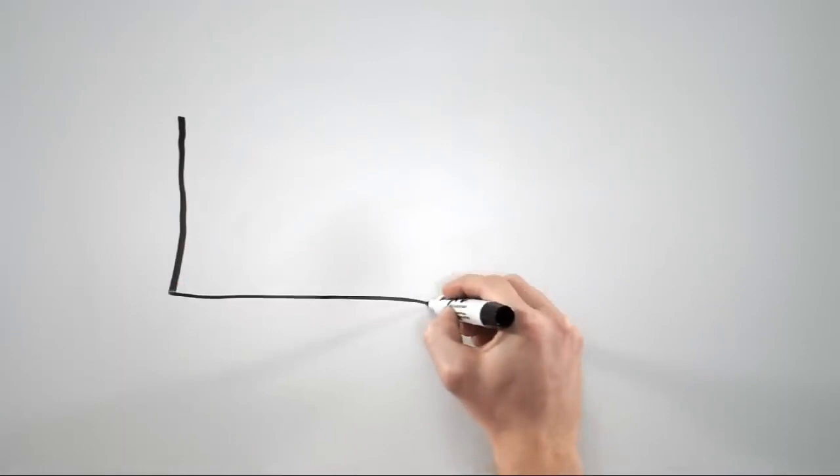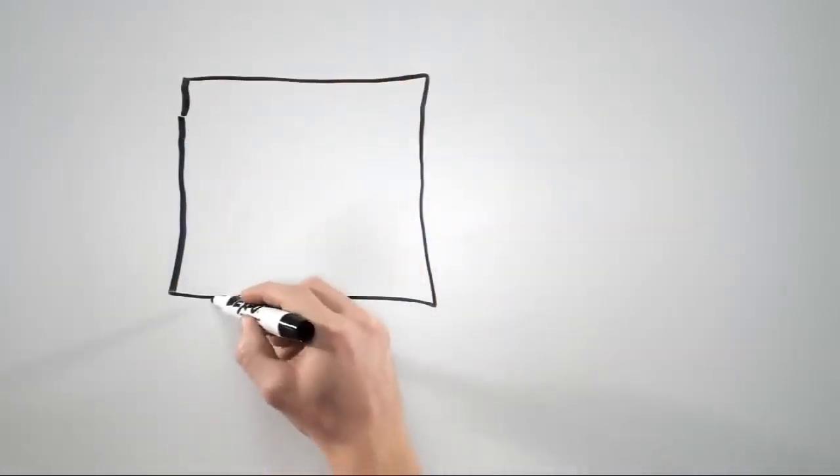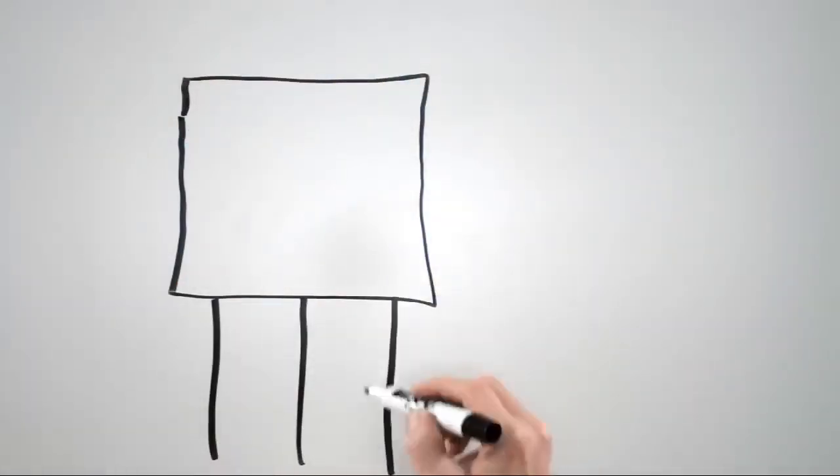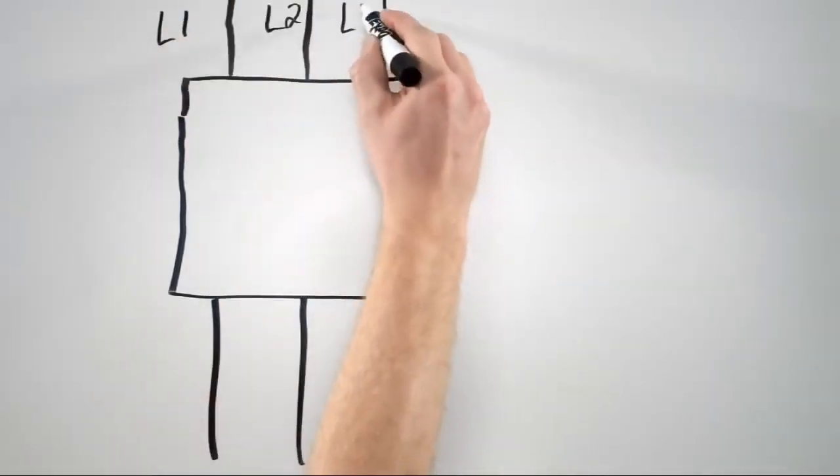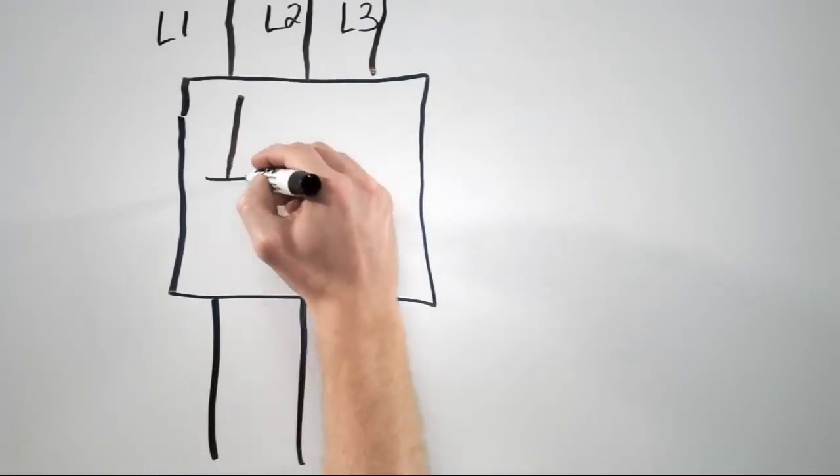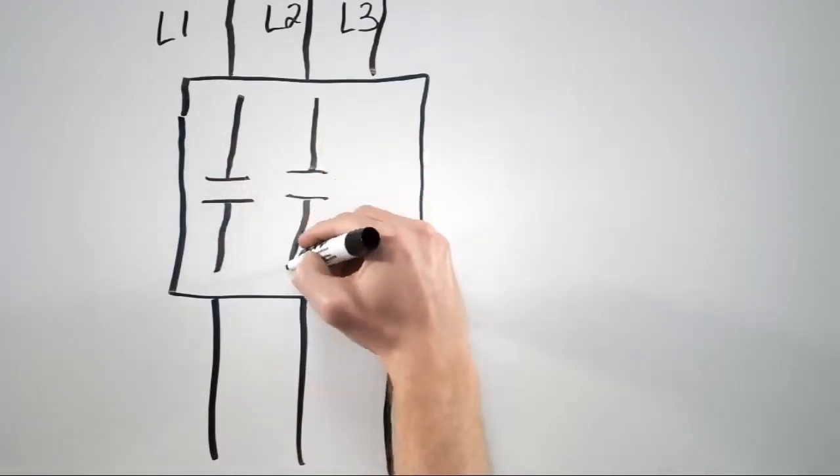Next, let's talk about auxiliary contacts. If we're looking at a contactor from the top down, we've got three phase power coming in the top, three contacts on the inside, one for each phase, and three phase power going out the bottom.